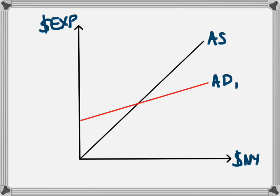Basically, if we have a greater MPC, it will lead to a steeper aggregate demand curve — so from AD1 to AD2. The difference between AD1 and AD2 is a higher marginal propensity to consume, and that just means that for every dollar of income households are receiving, they're spending more of that dollar. Increasing the marginal propensity to consume on its own leads to an increase in the level of aggregate demand and the level of national income.